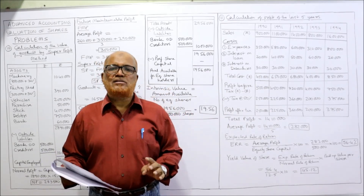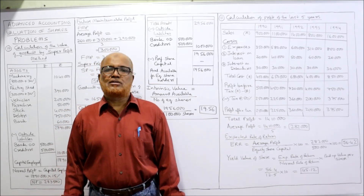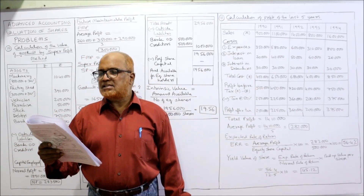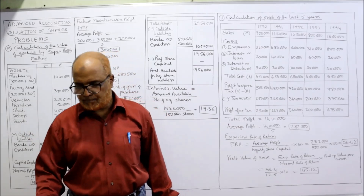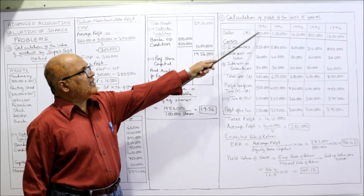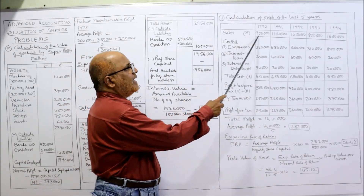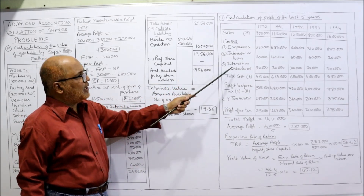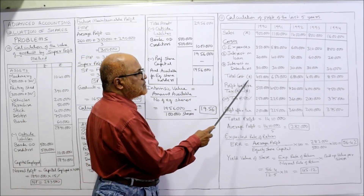In this problem, profit is not given directly — we have to find it. Profit = sales minus all expenses. Assume the rate of taxation at 50%, and the normal rate of earnings (NRR) is 12.5%. For each year 1990–1994, sales are denoted as A. The three costs — expenses, interest on loan, and interest on debentures — are totalled as B. Profit before tax = A minus B.